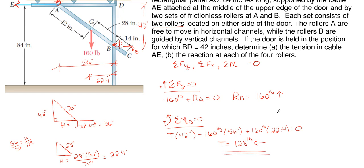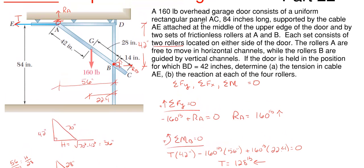So to get my reaction here at B, all I have to do is sum forces in the horizontal direction because T and B are the only ones there. So that is really quick. So if we sum forces in the horizontal direction, take to the right is positive. I would have minus 128 pounds for my tension plus my RB assumed to the right equal to zero. Well, RB is just going to be 128 pounds to the right.